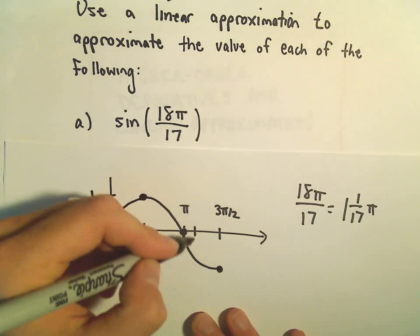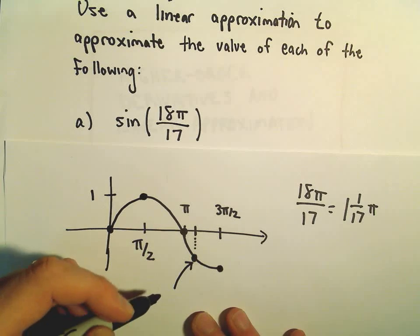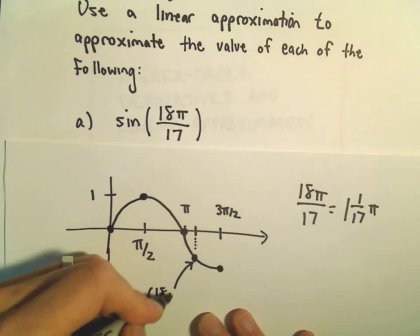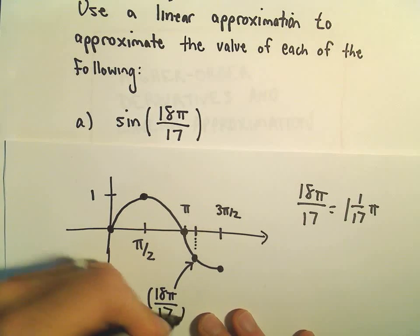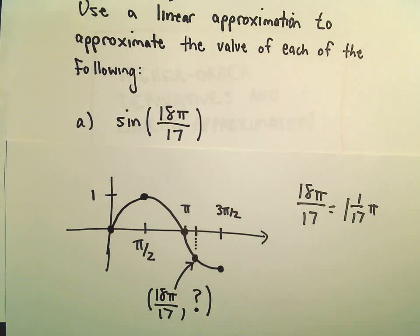So let's stick it in there somewhere, you know, not quite to scale. But let's suppose that this is the x coordinate of 18π over 17. Again, what we're trying to do is we're trying to figure out the value of the y coordinate. That's what we would like to know.